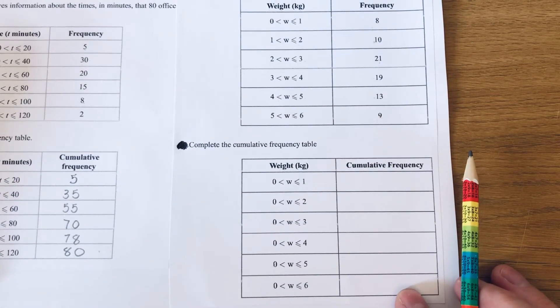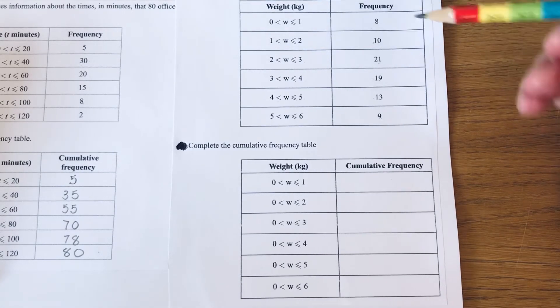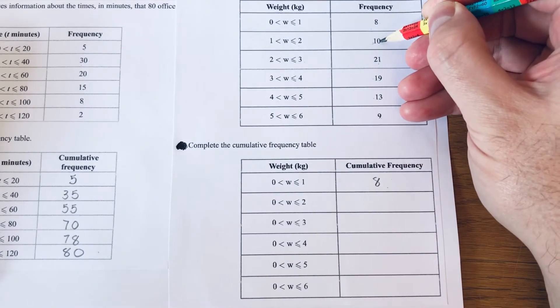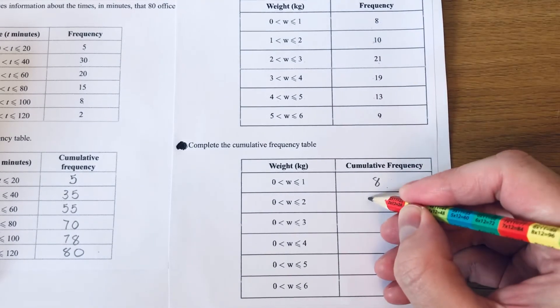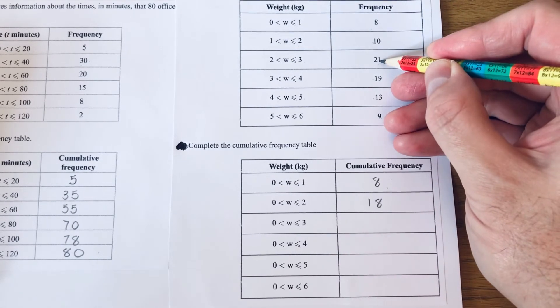So again, we need to complete the cumulative frequency table. We copy down our first frequency, which is 8. So to get the next one, we do 8 add 10, which is 18. Then we need to add 21 onto 18, which is 39.